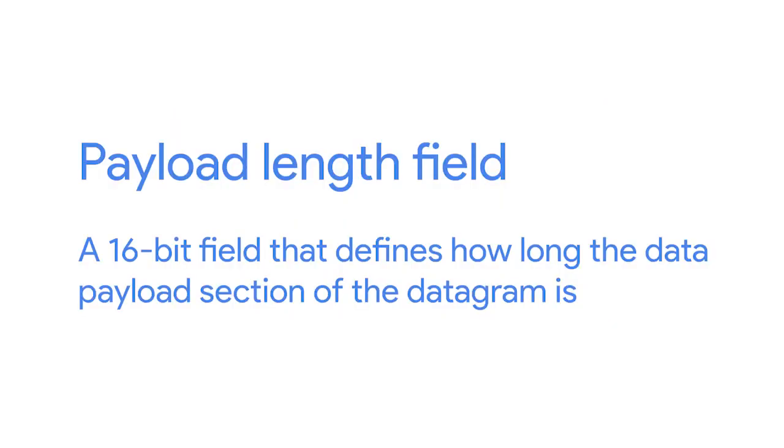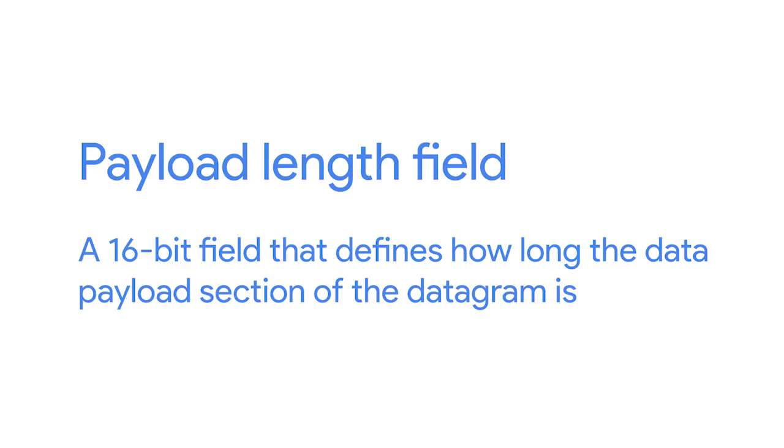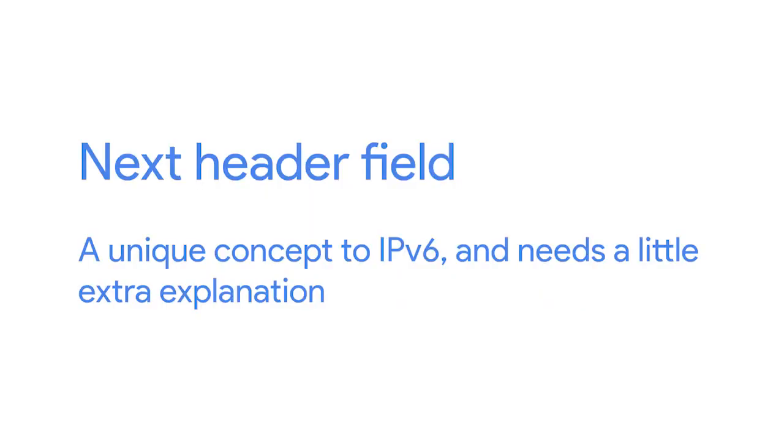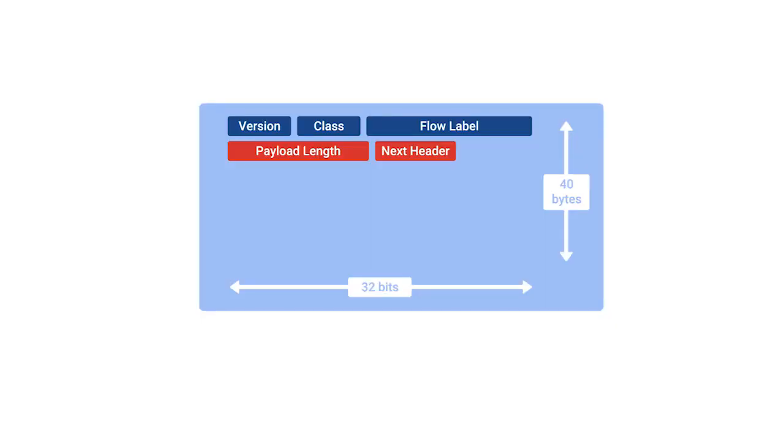Next, you have the payload length field — a 16-bit field that defines how long the data payload section of the datagram is. Then you have the next header field, which is a unique concept to IPv6. IPv6 addresses are four times as long as IPv4 addresses, meaning they take longer to transmit across a link. To help reduce this overhead, the IPv6 header was built to be as short as possible by taking all optional fields and abstracting them away from the IPv6 header itself. The next header field defines what kind of header is immediately after this current one — these additional headers are optional, and each contains its own next header field, allowing for a chain of headers to be formed if there's a lot of optional configuration.